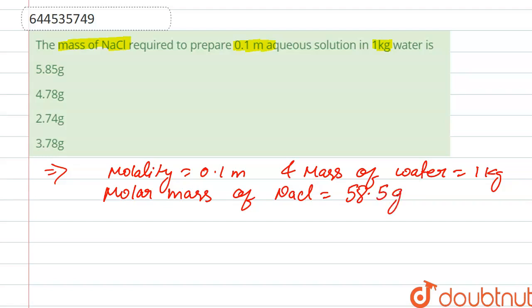We know that the molar mass of NaCl, that is 58.5 grams per mole. Then we calculate the number of moles.